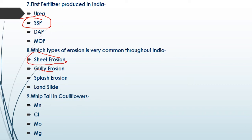The last question of this video is: whiptail in cauliflower is caused due to deficiency of which nutrient? The first option is magnesium, second is chlorine, third is molybdenum, and fourth is magnesium. The right answer is molybdenum. This is a very common and important question that appears everywhere — everyone should remember it.